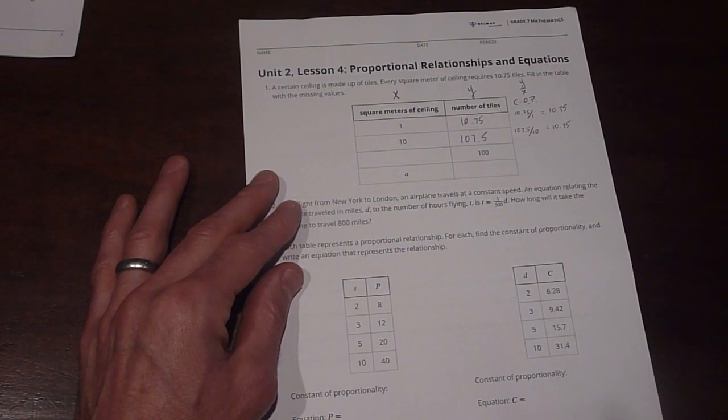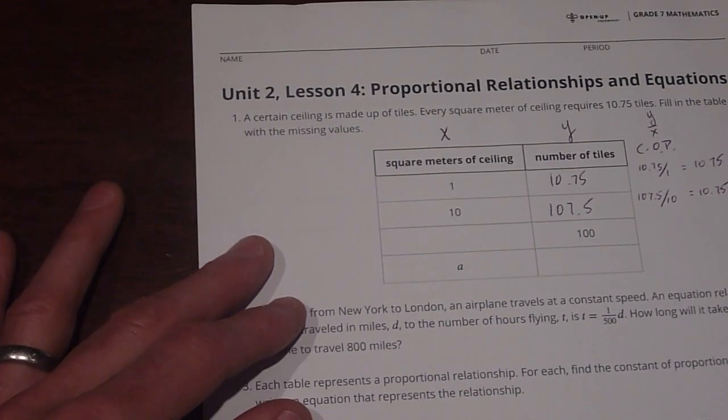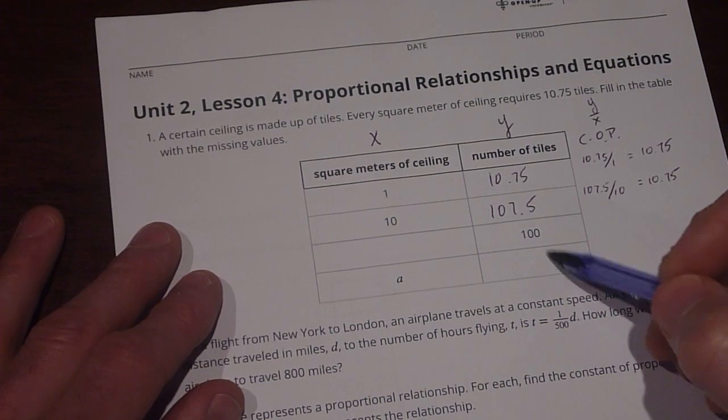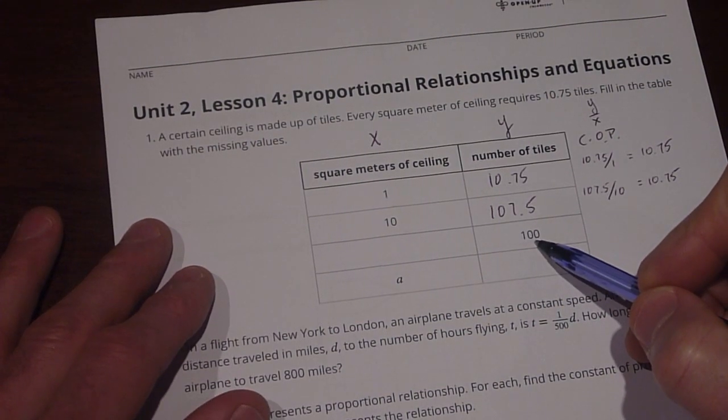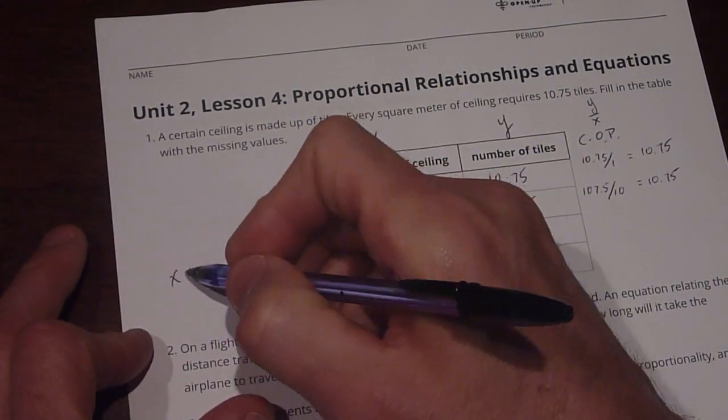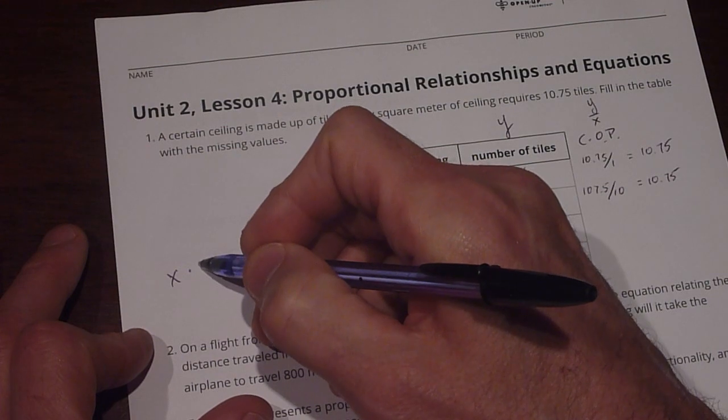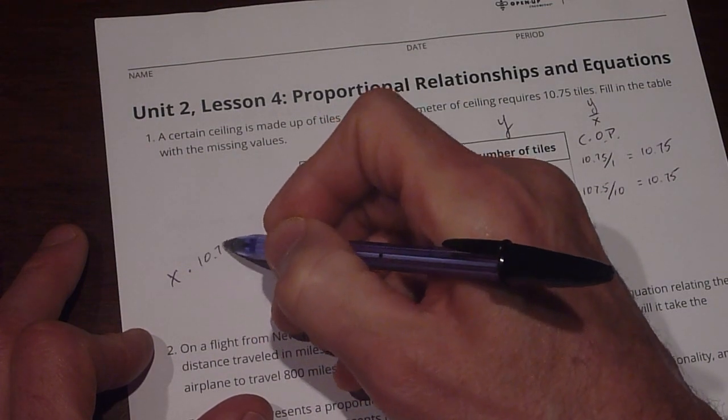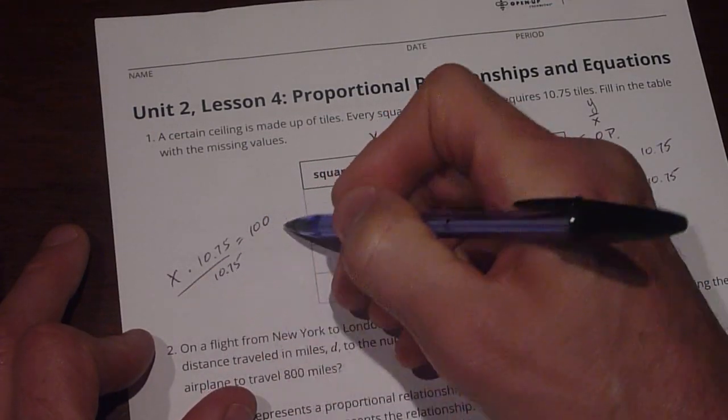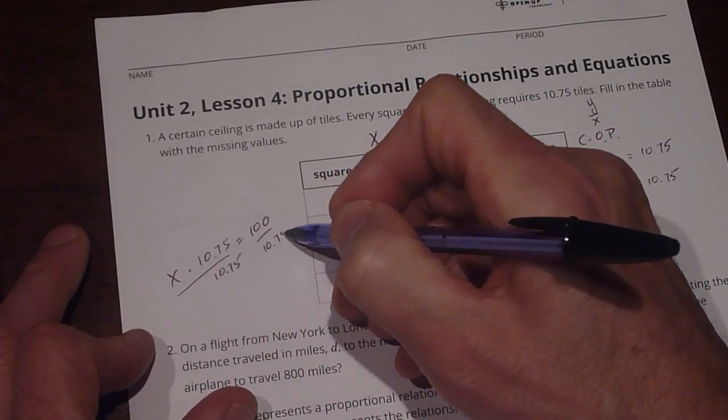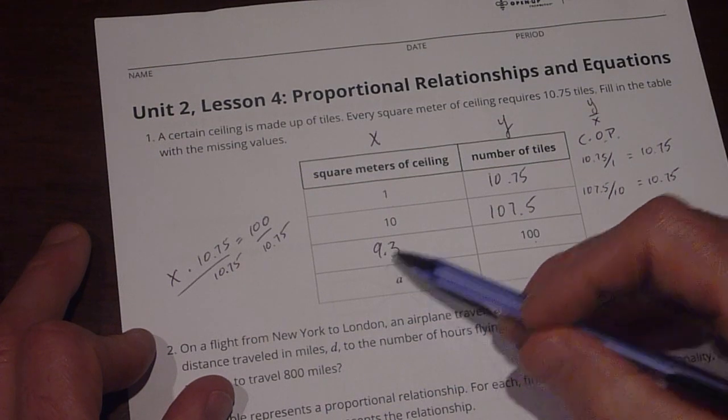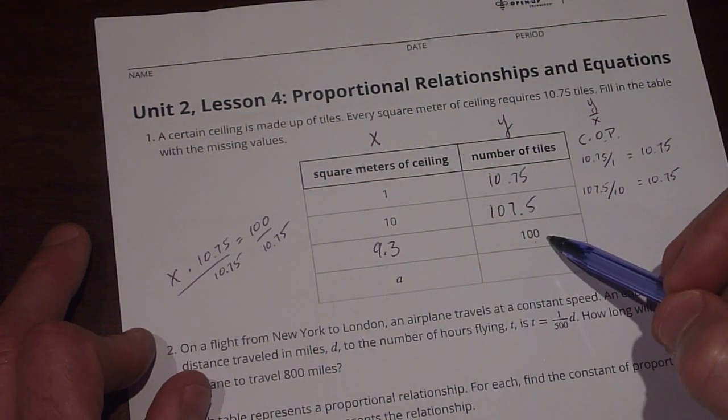Okay. Now the next one is 100. Well, how do we figure out what that's going to equal? Well, we can say something, this number here, X times the constant of proportionality, 10.75, equals 100. And how do we get that? Well, we can divide by 10.75 on both sides, and that's going to give us 9.3. So 9.3 square meters of ceiling can be covered in 100 ceiling tiles.